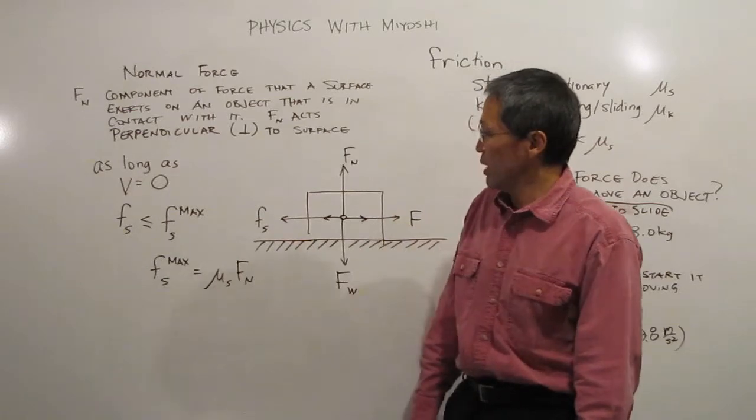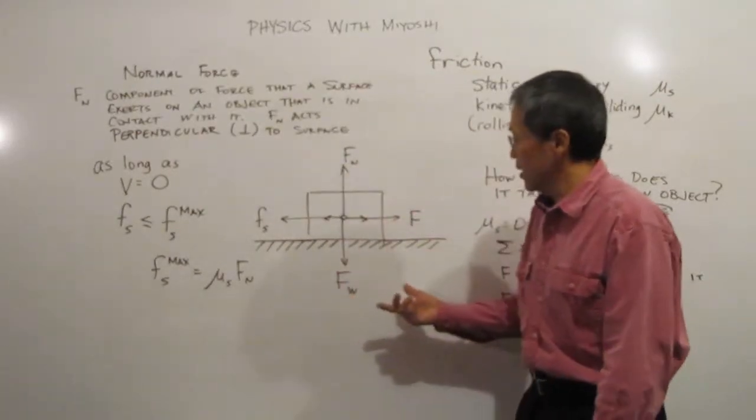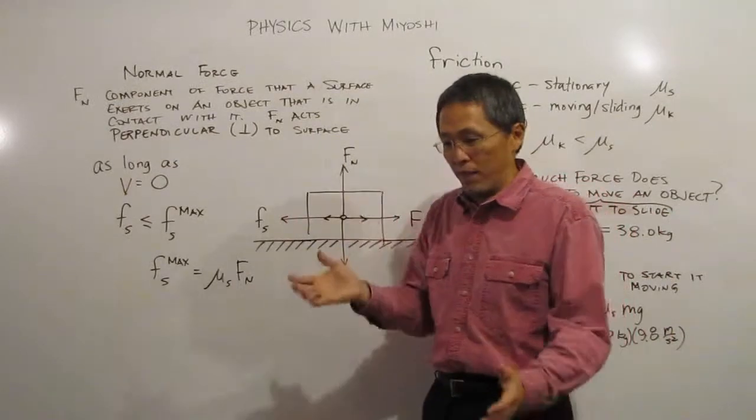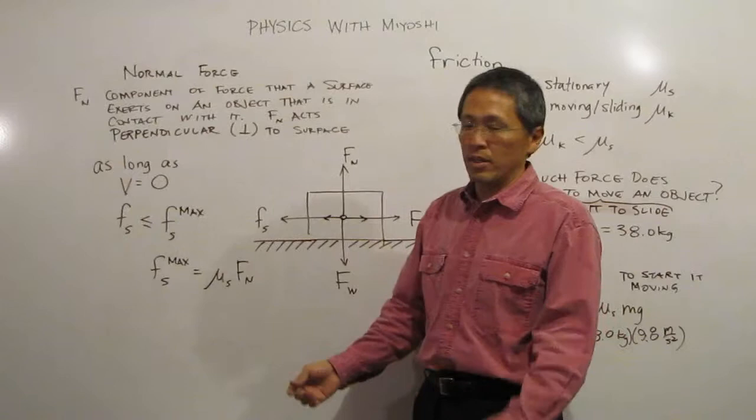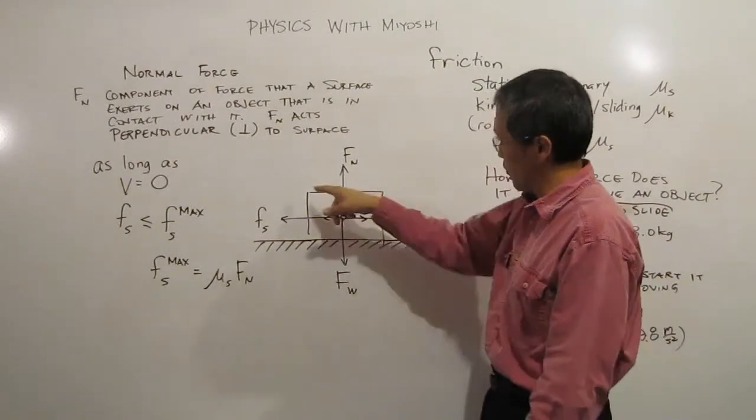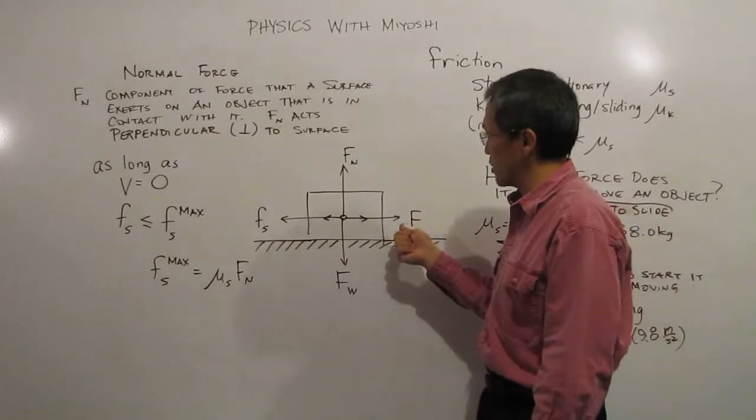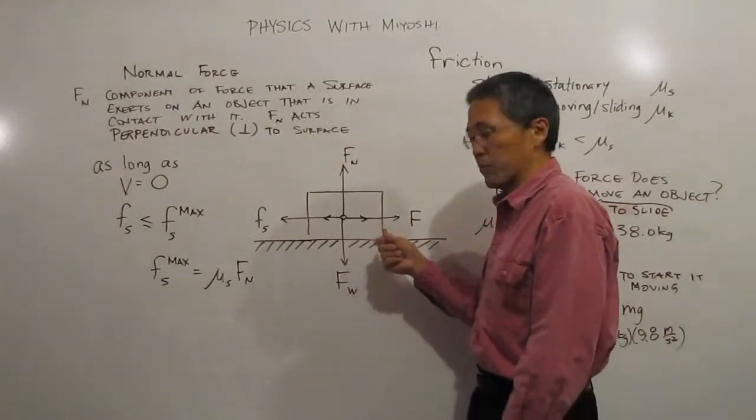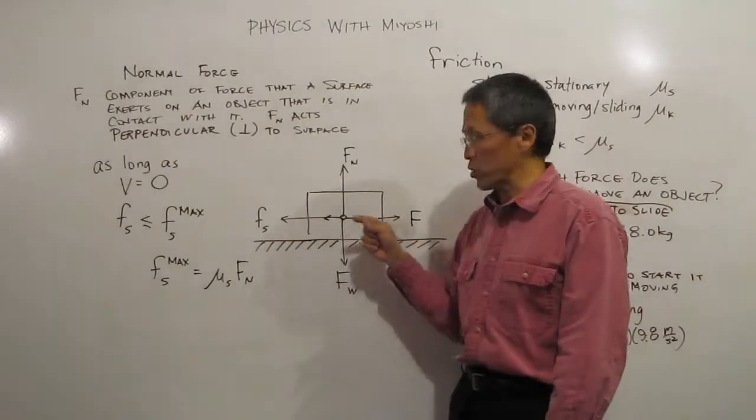So how do we determine friction? Well first of all, let's think about this. If you have a box or something on the floor or on a table and you pull on it, like I have my little free body diagram here, if I pull on this guy with some force, as long as it keeps from moving then that means that there's got to be some force going the other way, right?